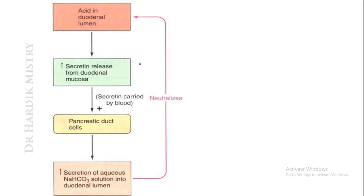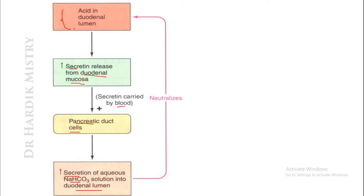Regarding secretin: whenever acid is present inside the duodenal lumen, there will be increased secretin release from the S cells of the duodenal mucosa. As it is a hormone, it is carried by the blood and stimulates the pancreatic duct cells to release sodium bicarbonate, resulting in increased secretion of aqueous sodium bicarbonate solution into the duodenal lumen. So acid in the duodenal lumen stimulates the S cells to release secretin into the blood, which acts on pancreatic duct cells to increase aqueous sodium bicarbonate secretion.